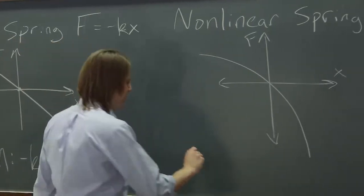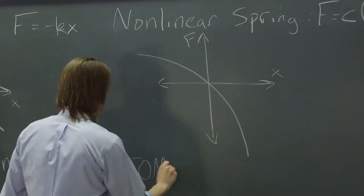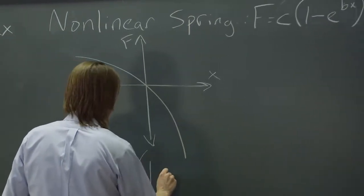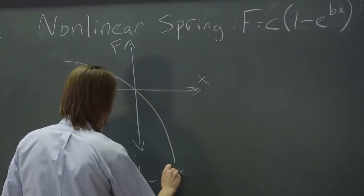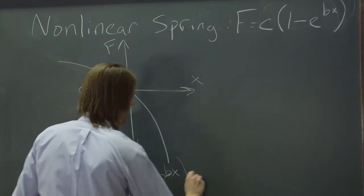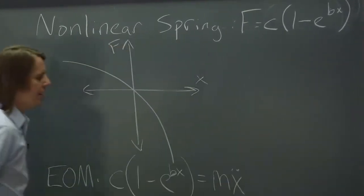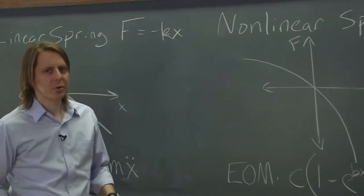If we write the equation of motion, we get c times 1 minus e to the bx equals mx double dot. And now we have a nonlinear equation of motion.